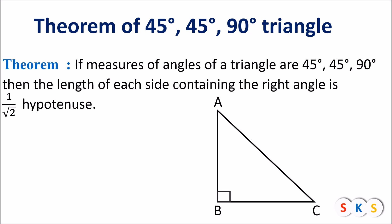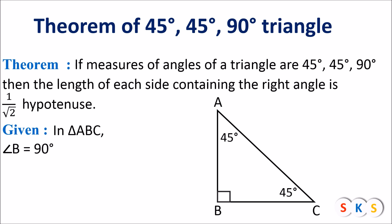First we will make a right angle triangle. We have triangle ABC in which angle B is 90 degrees, therefore triangle ABC is a right angle triangle. The remaining two angles, angle A and angle C, will each be 45 degrees, as you can see in the figure.